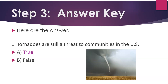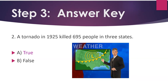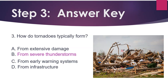Here are the answers. Number 1: Tornadoes are still a threat to communities in the United States. True. Number 2: A tornado in 1925 killed 695 people in three states. True. Number 3: How do tornadoes typically form? From severe thunderstorms.